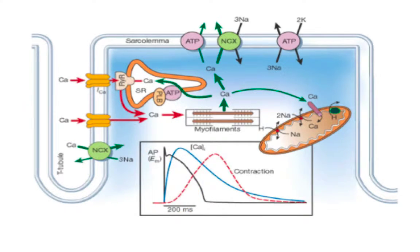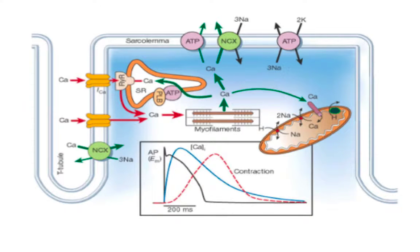Later, outward potassium currents contribute to repolarization. A consequence is that the refractory period of the cardiac action potential is greater than that of a nerve or skeletal muscle. Whereas in skeletal muscle you can stimulate very rapidly to produce tetanus, in cardiac muscle you cannot—the refractory period is long enough that you can't stimulate more than a few hertz.